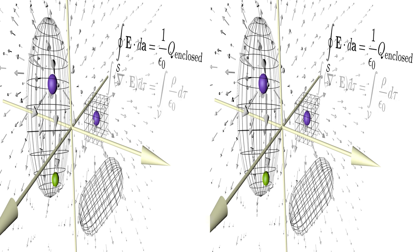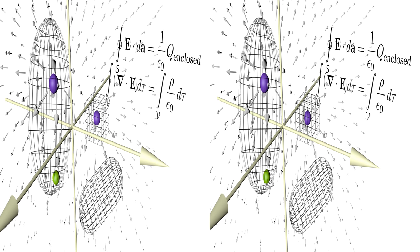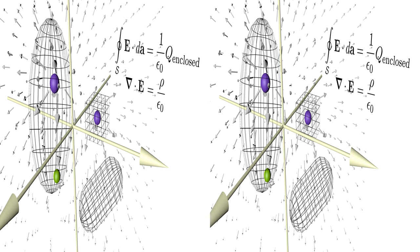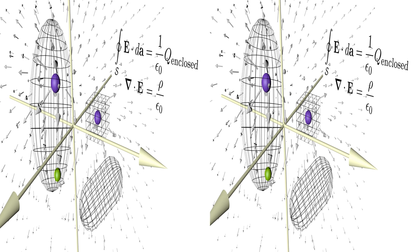We can apply the divergence theorem on the left hand side and rewrite the right hand side as a volume integral and find that the divergence of the electric field is equal to the charge density divided by epsilon zero. This is Gauss's law in differential form.